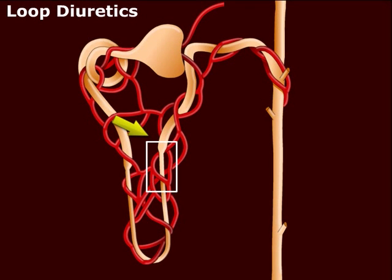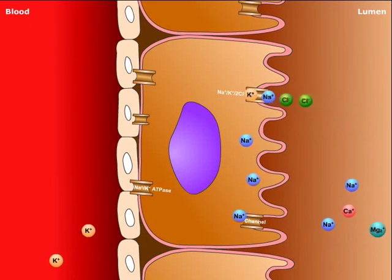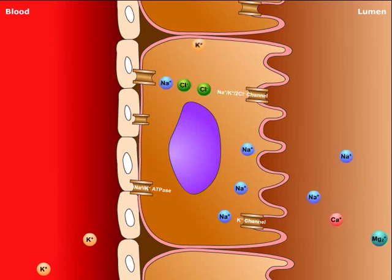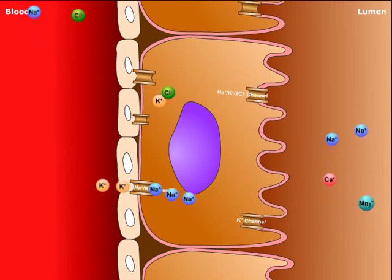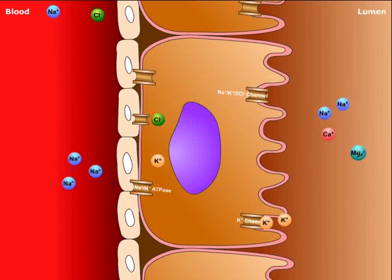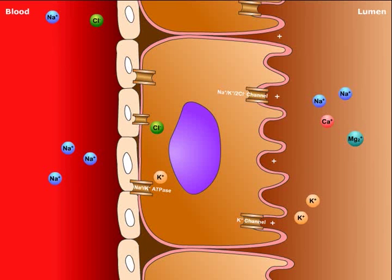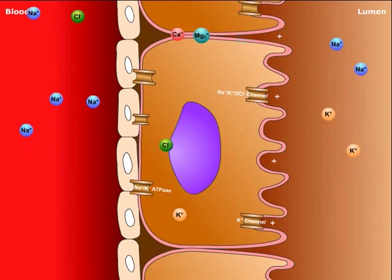Let's take a closer look at the thick ascending limb. Here, potassium and sodium dichloride are reabsorbed through a symport. Once inside the cell, sodium chloride is reabsorbed into the circulation through a sodium chloride pump along the basolateral membrane. In addition, sodium is exchanged with potassium through a sodium-potassium ATPase pump. As a result, a low intracellular sodium concentration favors the reabsorption of sodium from the lumen. Inside the cell, a high level of potassium causes it to leak back into the lumen, which creates a positive electrical potential within the lumen. Due to this positive potential, calcium and magnesium are shunted into the circulation between cells.